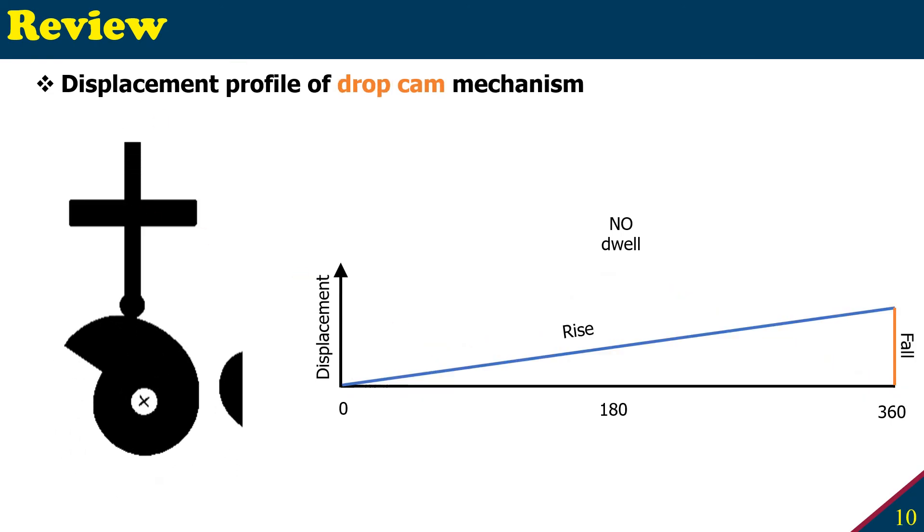Our fourth and last cam mechanism is the drop cam mechanism. It is also called snail drop or spiral mechanism. It is based on Archimedes logarithmic spiral that gives a triangular non-symmetric profile when you use the cam mechanism.